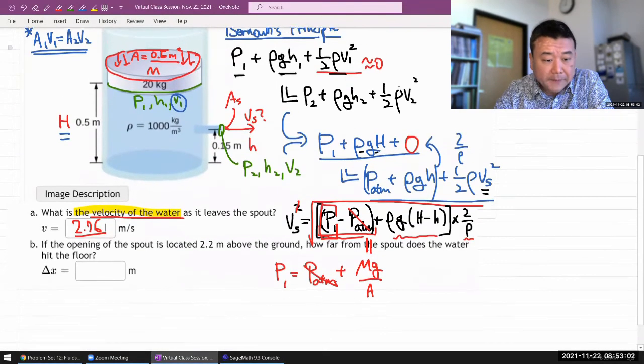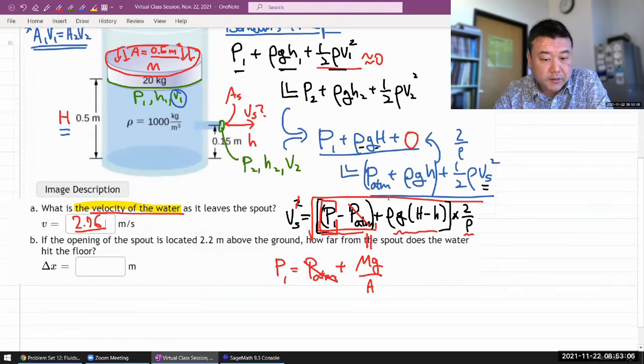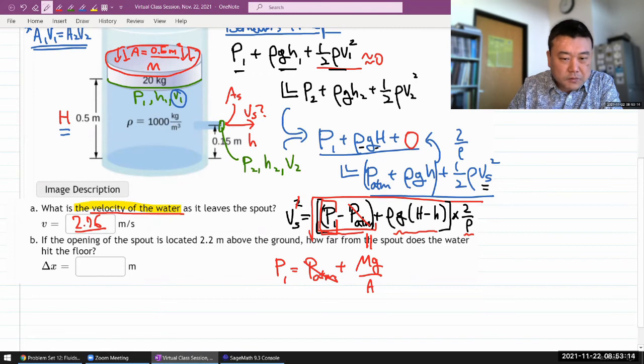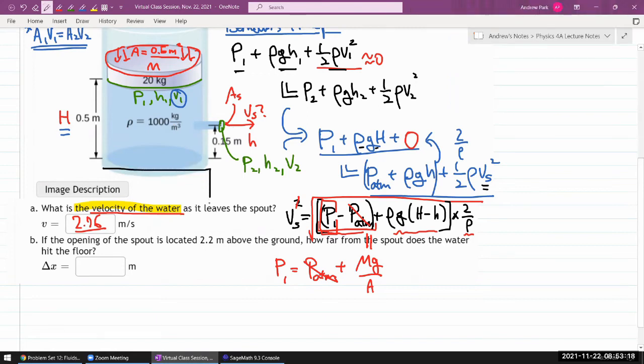So part B asks if the opening of the spout is located. Oh, I see. So when I was reading it silently to myself, I misread it thinking we are going to move the spout. No, that's not what it means. It's saying that it's on some kind of table, for example. So there's an additional distance of 2.05 meters to the ground from the top of the table. So from here all the way to the ground is 2.2 meters. How far from the spout does the water hit the floor? Oh, that's a projectile motion question. So you have some height that you're falling from. You have some horizontal initial velocity. And it's going to hit the water at some distance d. It's not scary to calculate that.